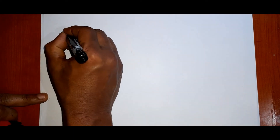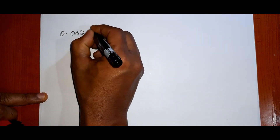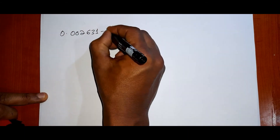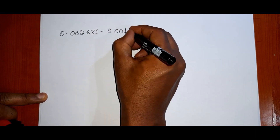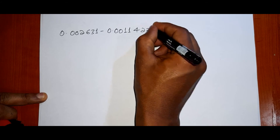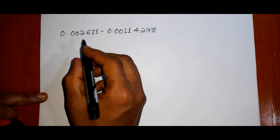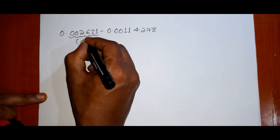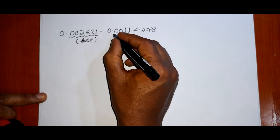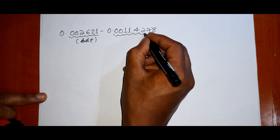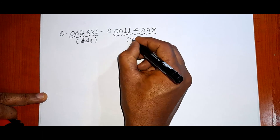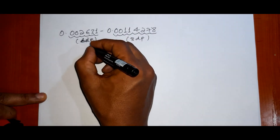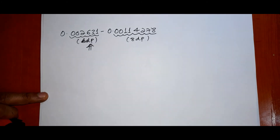Now this example: 0.000​2631 minus 0.000​114278. This is a subtraction problem. Count the decimal places: the first number has six decimal places (6 DP), the second number has eight decimal places (8 DP). The result should be on the level of the smallest, which is six decimal places.